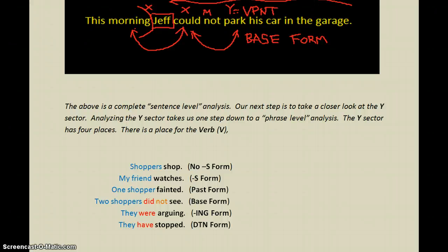For example: 'Shoppers shop.' Here we have a Y — shop — with the no-S form. 'My friend watches.' My friend is the subject; watches is the Y — it's a verb S-form. 'One shopper fainted.' One shopper is the subject; fainted is the Y; the X and M places are empty. And this is the past form.